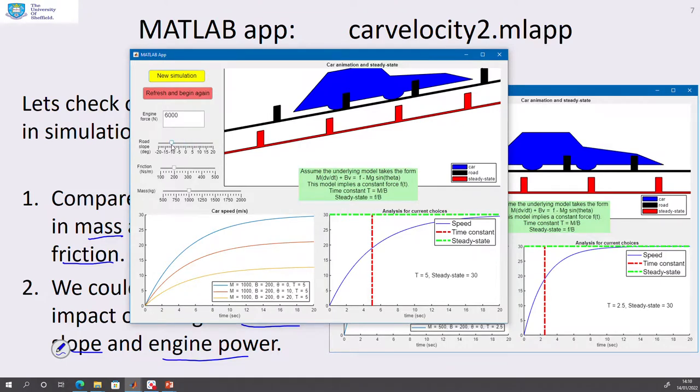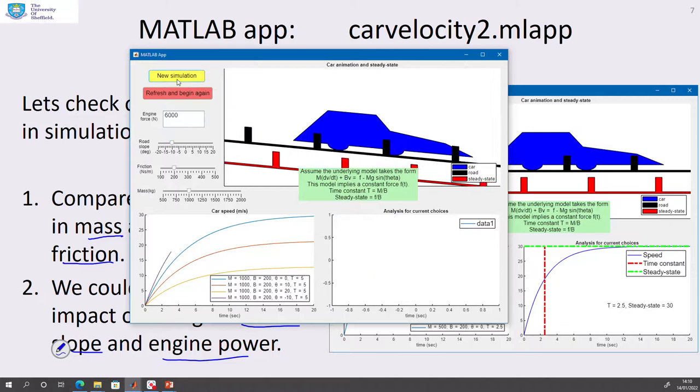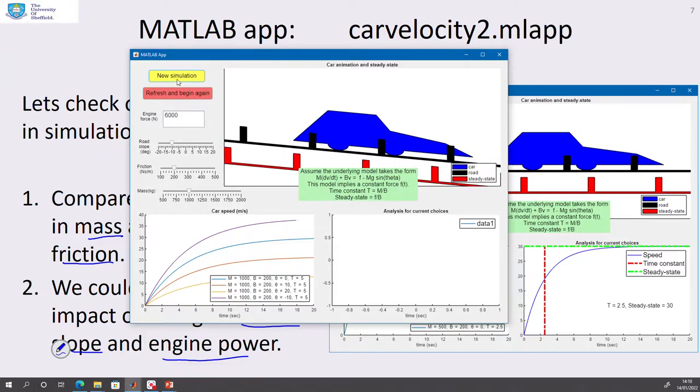And I can also go downhill. What would you expect to happen if you go downhill? And you can see now I'm going faster because I'm going downhill. But once again, the time constant's not changed.